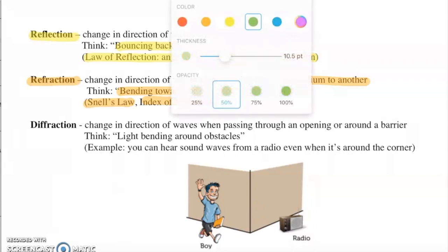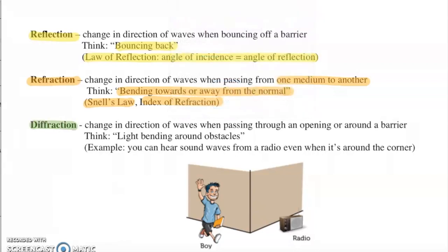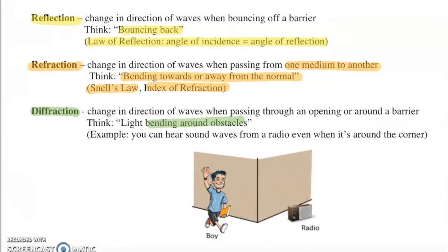Today our focus is going to shift to diffraction. Diffraction is a change in the direction of waves when passing through an opening or around a barrier. Simply put, this is when light or other waves bend around obstacles. An example of diffraction is if there's a radio or speaker around the corner from you — the sound waves diffract or bend around that corner and you can still hear the sound even though you're not right in front of it.